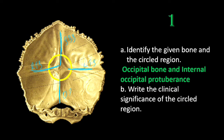At the region where the falx cerebri meets the tentorium cerebelli, you get a sinus known as the straight sinus. So this region is where the superior sagittal sinus continues as the right transverse sinus, and the straight sinus continues as the left transverse sinus. The occipital sinus also drains into this point. This group is known as the confluence of sinuses, or torcula herophili.